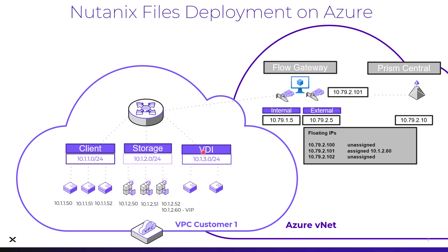We also have another subnet — VDI, storage, or really anything that's not a part of the deployment process. So we see the different IPs which our file server VMs have. We also have this VIP for the storage network. Inside of Azure, this VIP will also gain a floating IP from the Flow Gateway VM.